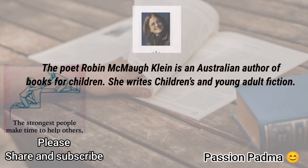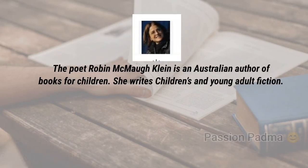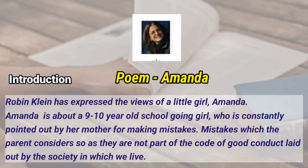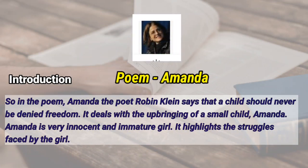Robin Klein is an Australian author of books for children. She writes children's and young adult fiction. Robin Klein has expressive views of a little girl in the poem Amanda. Amanda is about a 9 to 10 year old school-going girl who is constantly pointed out by her mother for making mistakes — mistakes which the parent considers as not part of the code of good conduct laid out by the society. So in the poem Amanda, the poet says that a child should never be denied freedom. It deals with the upbringing of a small child.